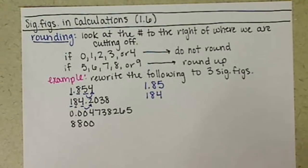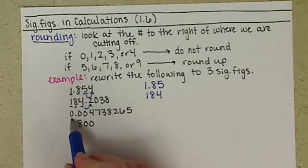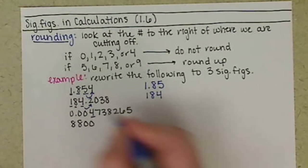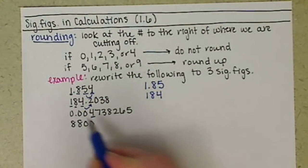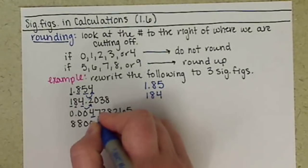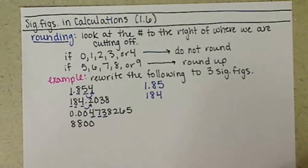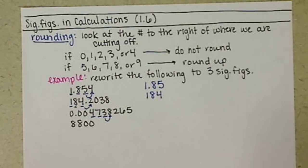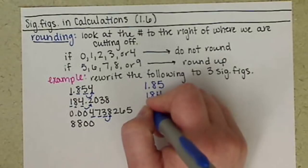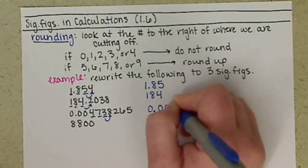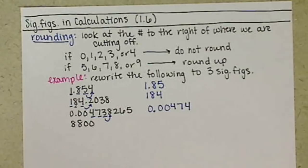Third number, a little bit tricky. Remember that we want to start counting our sig figs at the first non-zero digit. The zeros out in front are not significant, so the 4 is our first sig fig. 7 is our second, the 3 is our third. We look to the right of the 3. That's an 8, so we do need to round up, so we report this number as 0.00474.